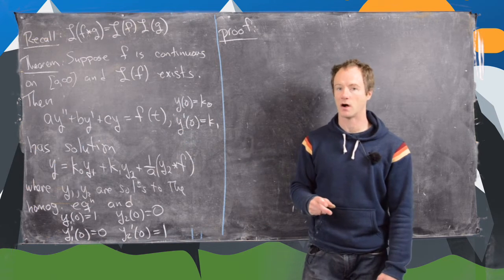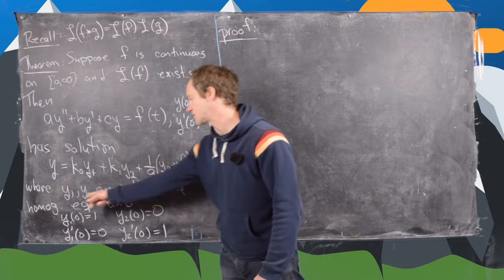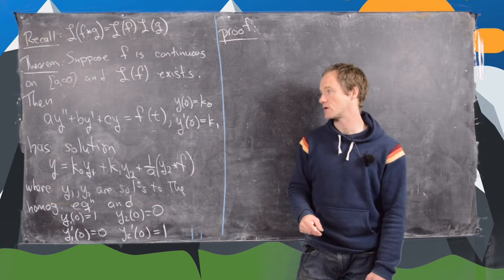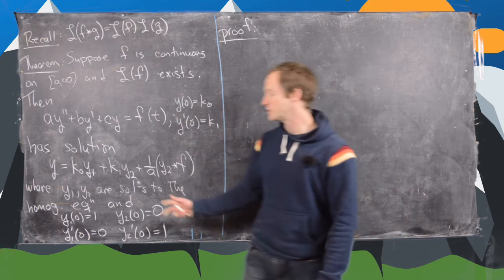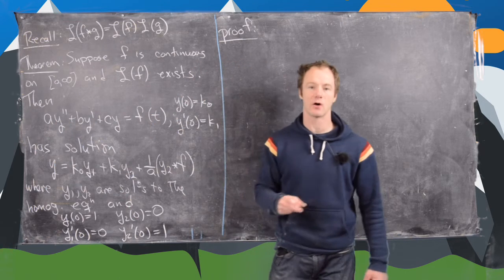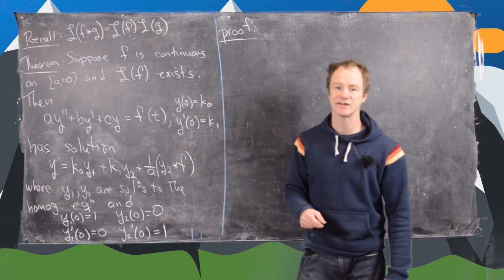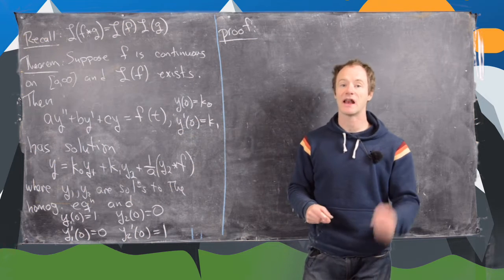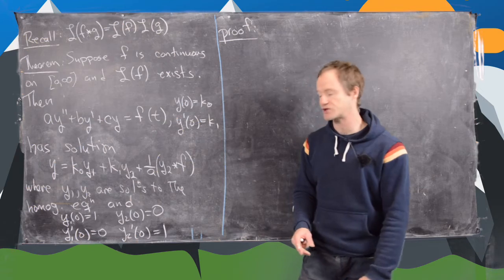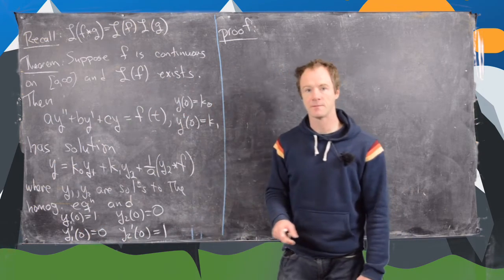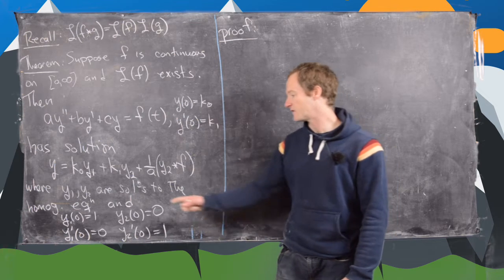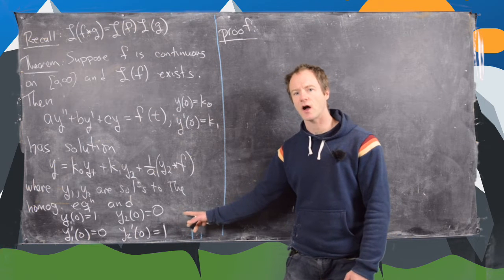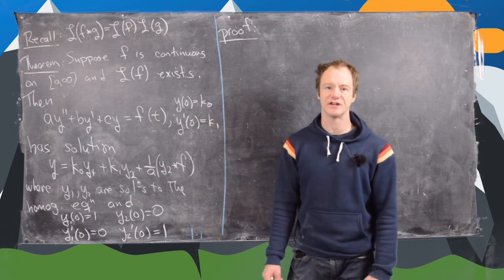Now I need to explain what y1 and y2 are. They are solutions to the corresponding homogeneous differential equation — that's the same equation but with 0 on the right-hand side. Since we have constant coefficients, that technique is well-known and fairly easy. But y1 and y2 are not just any solutions; they satisfy specific initial conditions: y1(0) = 1, y1'(0) = 0, y2(0) = 0, and y2'(0) = 1. You can think of these like orthogonal unit basis vectors for the solution space of the homogeneous equation.